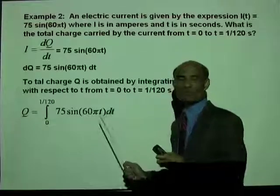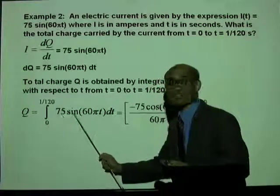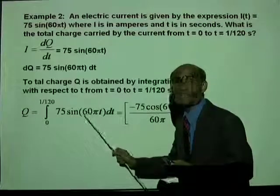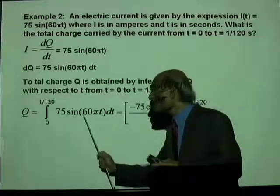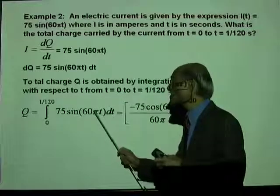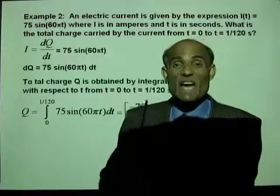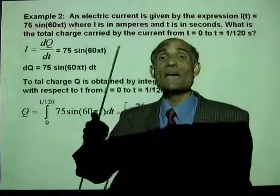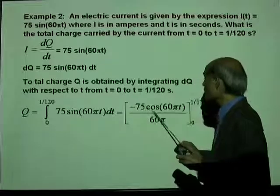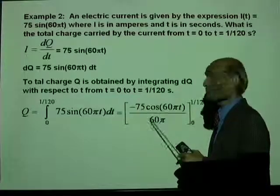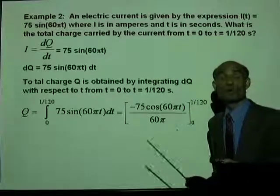Can you do this integration? Seventy five is a constant. The integral of sine of a quantity is negative cosine of the same quantity, divided by the derivative of the argument. The derivative of 60 pi T is 60 pi. So the integral of sine 60 pi T is negative cosine 60 pi T divided by 60 pi. The lower limit is zero and the upper limit is one over one hundred twenty.